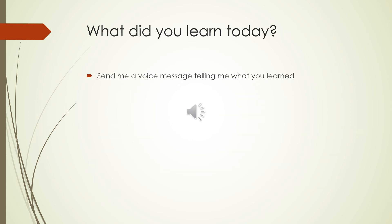So what did you learn today? Send me a voice message and tell me about what you learned. For your graded assignment: record a voice message explaining what you understood from today's lesson. Also write one sentence with a regular verb in the past tense and another sentence with an irregular verb. Write them on paper, take a photo, and send them to me.